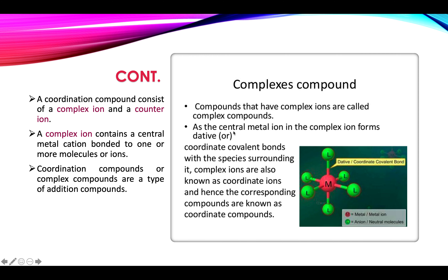The central metal atom forms a dative bond — also called a coordinate covalent bond — with the ligands. Because of the formation of coordinate covalent bonds, these complex ions are also called coordinate ions, and the compounds are called coordination compounds. In this picture, you can see that the central metal atom is in the middle, and these ligands L, L, L surround it. They can be anionic or neutral molecules. Their purpose is to donate the electron pair to the central metal atom through coordinate covalent bond.